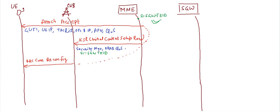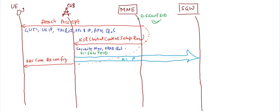What eNodeB will do is draw a bearer towards the SGW — you can call it the S1 bearer. This is a user plane bearer, while the messages shown in red are signaling bearers. The content of the RRC Connection Reconfiguration message will include the EPS Bearer ID, PS Bearer ID, and the DRB ID — the Data Radio Bearer ID. After getting this DRB ID, the DRB will be established.